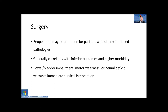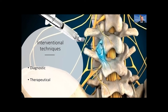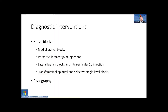Regarding surgery, there must be some clearly identified pathologies for re-operation. Re-operation usually has lower outcome and higher morbidity. Bowel and bladder impairments, motor weakness, or neurological deficits require immediate surgical intervention. The interventional techniques used in pain practice may be diagnostic — medial branch blocks, intraarticular facet joint injections, lateral branch blocks, intraarticular sacroiliac injection, transforaminal epidural, and discography — and therapeutical.